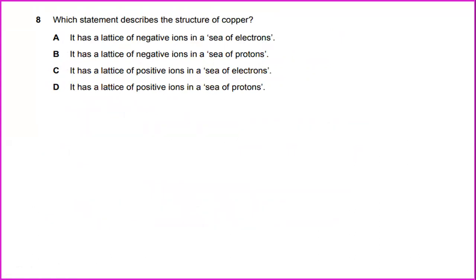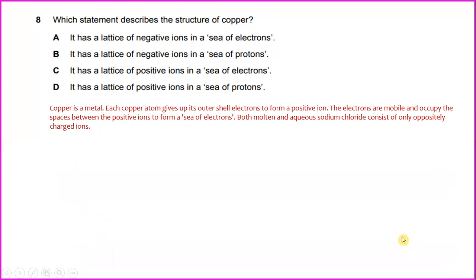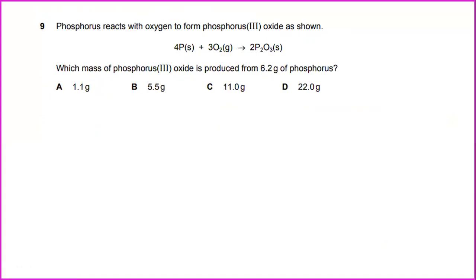Which statement describes the structure of copper? Copper is a metal. Each copper atom gives up its outer shell electron to form a positive ion. The electrons are mobile and occupy the spaces between the positive ions to form a sea of electrons. The answer is: it has a lattice of positive ions in a sea of electrons.